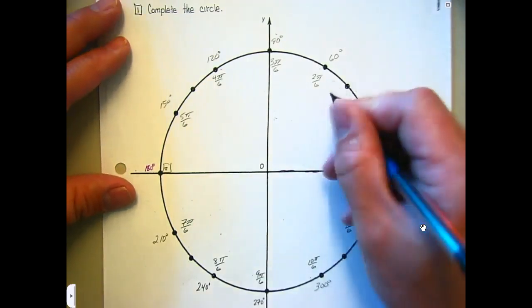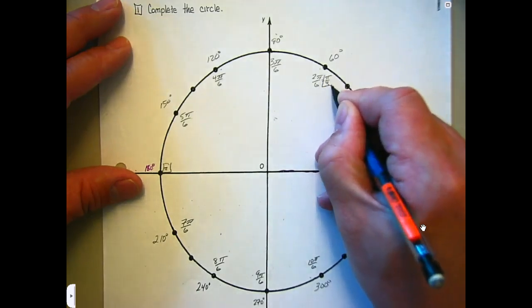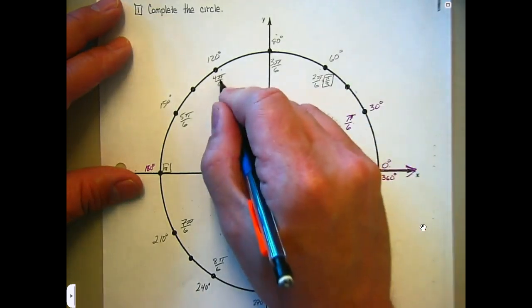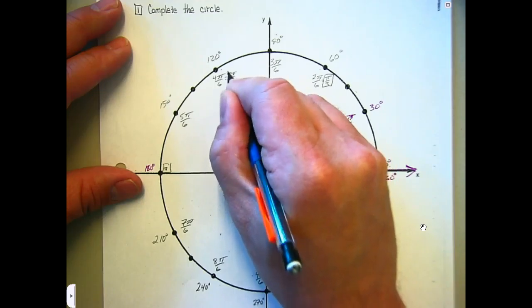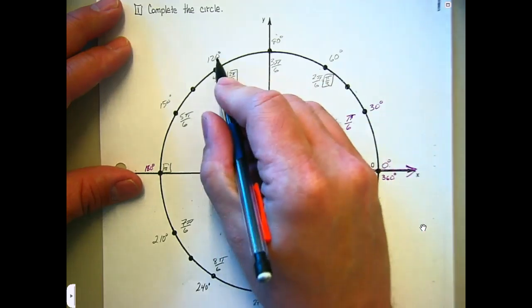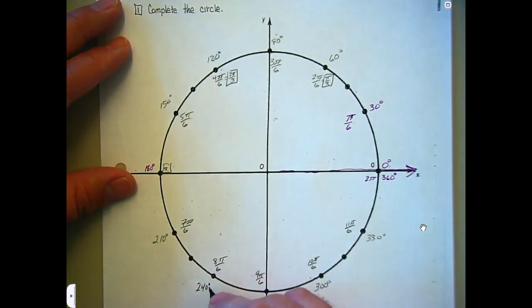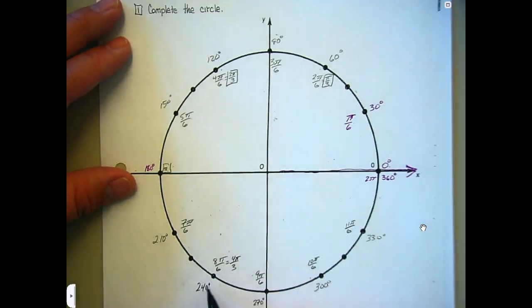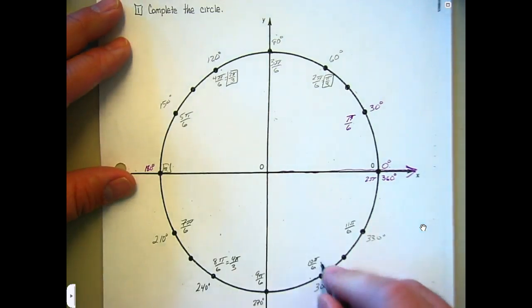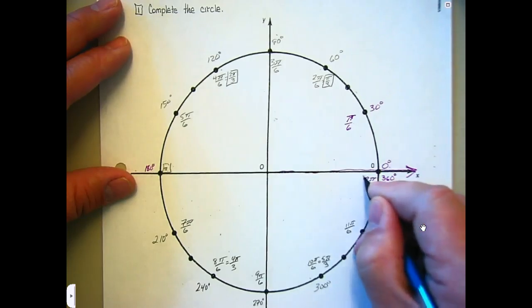So 1π/6 stays as π/6. 2π/6 becomes π/3 — that means every 60 degrees is π/3. So 60 is 1·π/3, 120 is 2π/3 (what 4π/6 reduces to), 180 is 3π/3 which is π, 240 is 4π/3 (what 8π/6 reduces to), and then another 60 brings us to 360, which is 2π. Notice I was able to check my work by doing that.